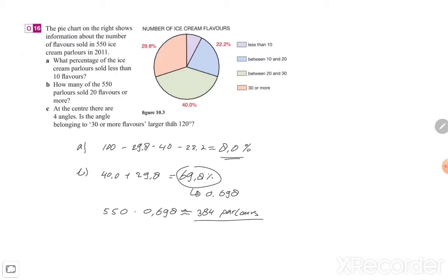All right, so that's exercise b, then exercise c. Let me just do exercise c here. At the center there are four angles, you will find it in the circle diagram. Is the angle belonging to 30 or more flavors larger than 120 degrees? So this angle, 30 or more, that one there...